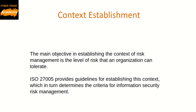Context establishment: The main objective is determining the level of risk that an organization can tolerate. ISO 27005 provides guidelines for establishing this context, which determines the criteria for information security risk management. This includes criteria for defining the impact of specific risks — such as damage to the organization's reputation, financial loss, legal penalties — for estimating acceptable risk levels, and for determining the organization's objectives. For example, a risk that may negatively affect productivity for more than one day could be considered an unacceptable level of risk.